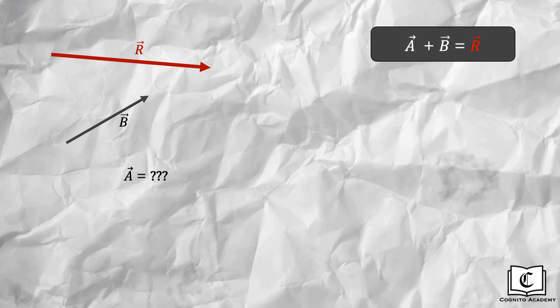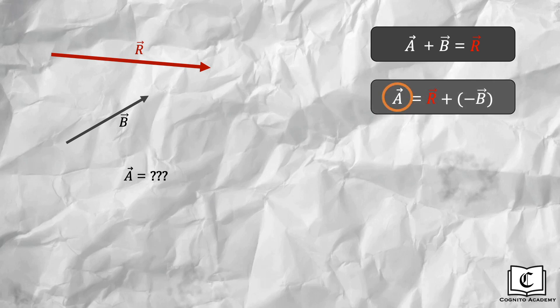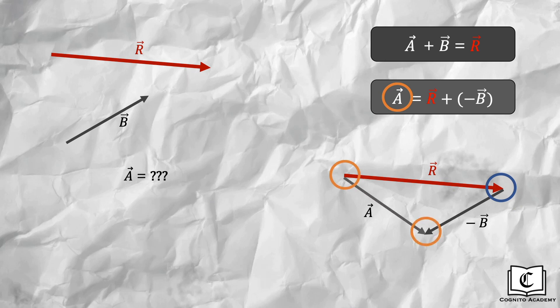Here is a quick summary of the concept. First, come up with the vector equation. Then, make the unknown vector the subject of the equation. Then, perform vector addition by connecting the tip of one vector to the tail of the other. Then, draw the unknown vector from the tail to the tip. Finally, measure or calculate both the magnitude and direction of the unknown vector.